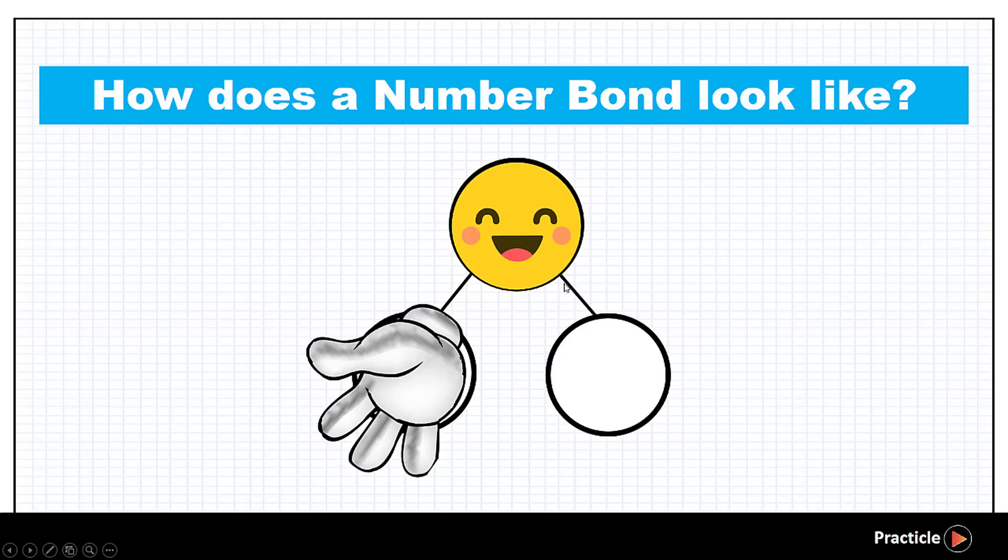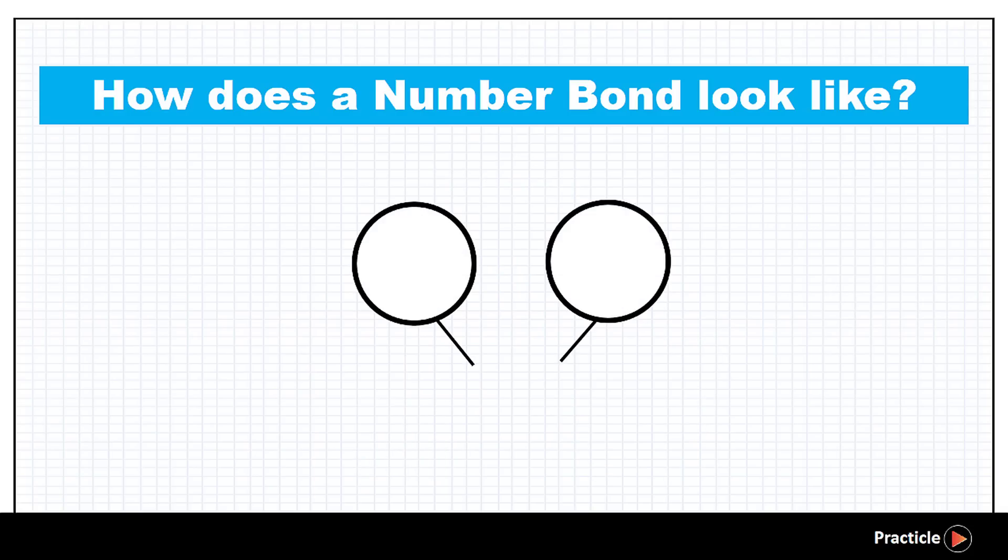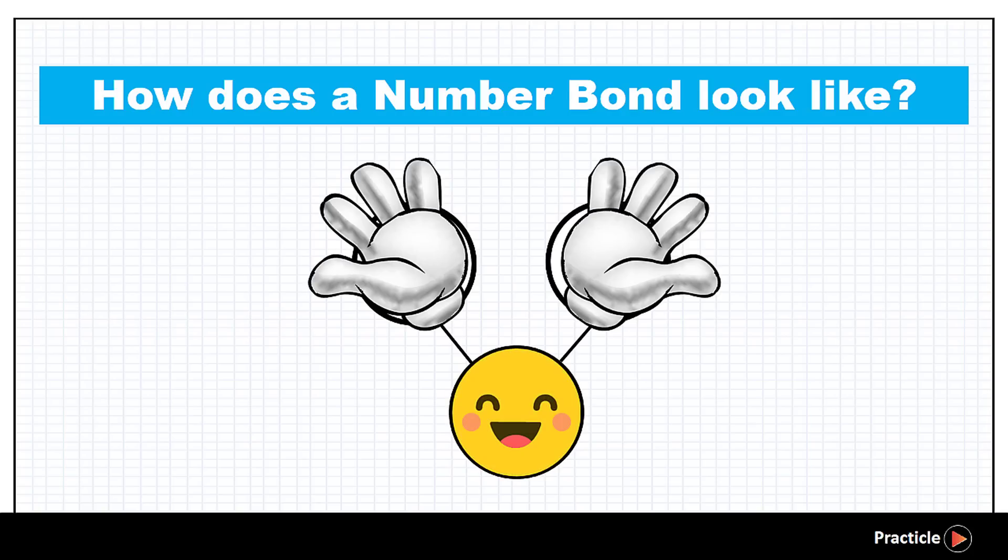Imagine a person holding out 2 hands. Can you picture that? Now number bonds can be drawn in many different ways. Sometimes, the number bond that you see can have 2 circles on the top that are each connected to the same circle below just like a person who is putting out his hands.